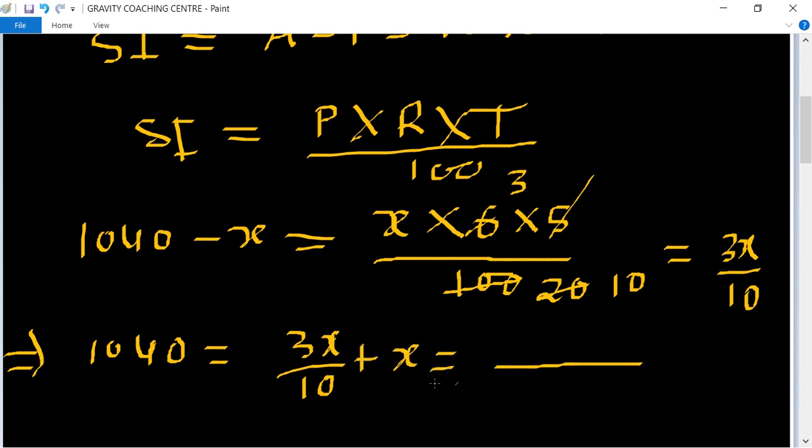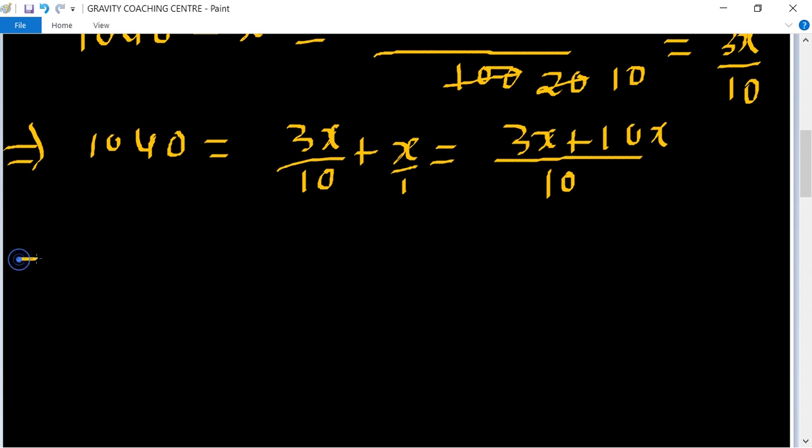And now take the LCM of 10 into 1, 10 equal to 3x plus 10x. Implies that 1040 into 10 equal to 13x.